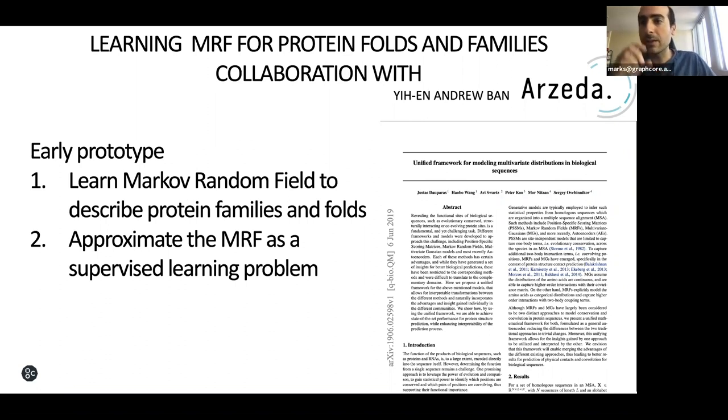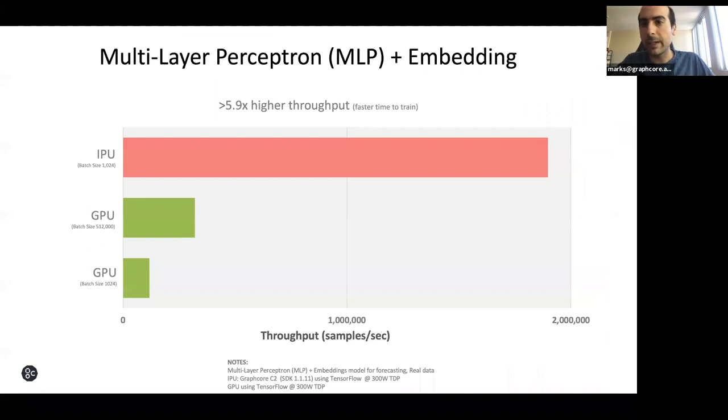Another collaboration I'm very excited about is this class of probabilistic algorithms with learning Markov random fields to learn protein folds and families. This is a collaboration with Rzeta, specifically Andrew Ban. The idea is that we can use Markov random fields to describe protein families and their folds. We can also approximate these MRFs as a supervised learning problem. Because when it comes to traditional multi-layer perceptrons, we see such dramatic improvements in throughput and training time, all of the results translate here. We're very excited about the stable collaboration with Rzeta, and there'll probably be more public work that we'll be sharing soon.